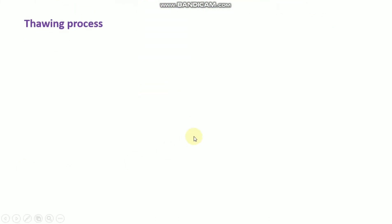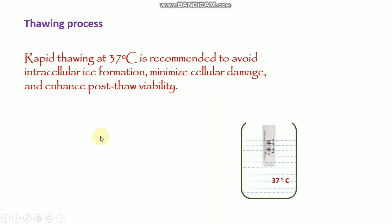The thawing process is also important. After cryopreservation, you have to thaw the cells. Rapid thawing at 37 degrees centigrade is recommended to avoid intracellular ice formation. You can directly place your cryopreserved vials in 37 degree centigrade water to warm and melt your cells.